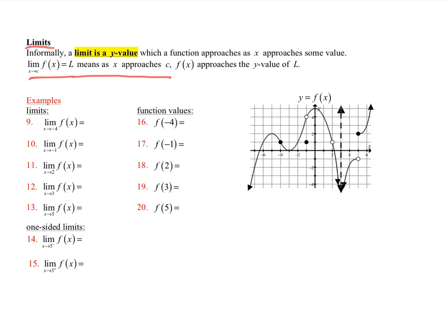Let's try some examples. For the limit as x approaches negative 4, I have to be driving to the same place from both sides in order for the limit to exist. And yes, the y-coordinate there is going to be 1. Left and right limits would both be 1. We're getting closer and closer to 1 as x gets closer and closer to negative 4.